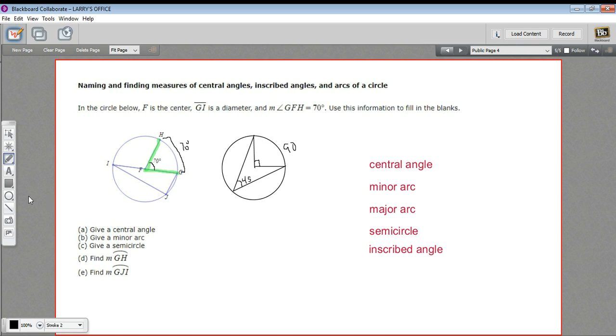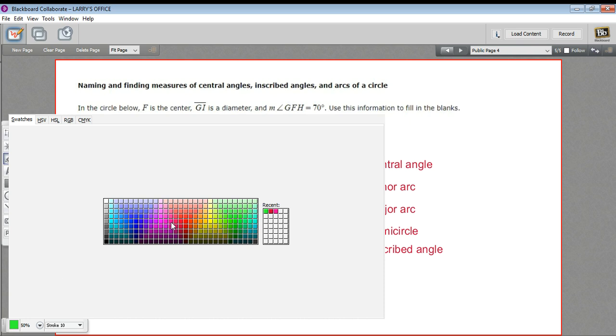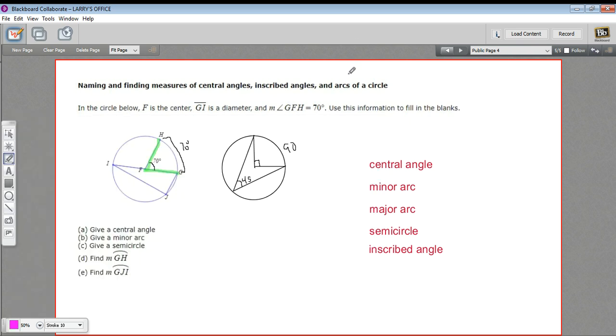This type of angle is called an inscribed angle. And actually, let's see if we can find one in our diagram here. We'll put this in a different color. So if we start at I and go out to G and then start at I and go out to J, what we have there is an inscribed angle. So it starts at one end of the circle and cuts off an arc at the other end of the circle.